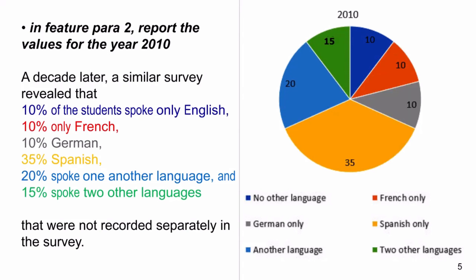In Feature Para 2, report the values for the year 2010. A decade later, a similar survey revealed that 10% of students spoke only English, 10% only French, 10% German, 35% Spanish, 20% spoke one other language, and 15% spoke two other languages that were not recorded separately in the survey.